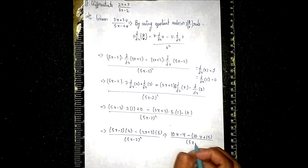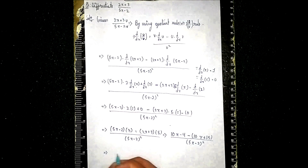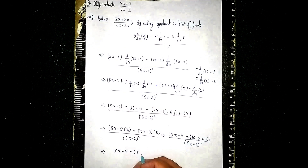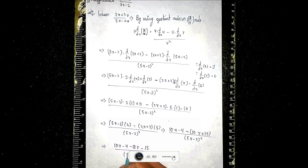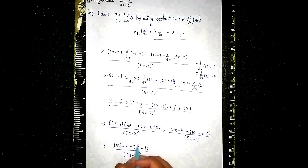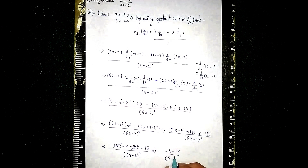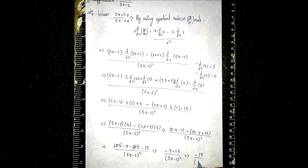Now we open the bracket and multiply through by the minus sign. We get: 10x minus 4, then minus 10x, minus 15, all divided by (5x - 2) whole squared. The 10x and minus 10x cancel out. What remains is minus 4 minus 15, which is minus 19. So our final answer is minus 19 divided by (5x - 2) whole squared.